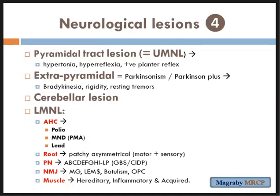The lower motor neuron lesion starts from the anterior horn cell down to the muscle. Any lesion from the anterior horn cell through the root, peripheral nerve, neuromuscular junction, or muscle is considered a lower motor neuron lesion. The most common anterior horn cell lesions include polio, motor neuron disease, and lead poisoning. For the root: any radiculopathy. For peripheral neuropathy, there are specific causes — a mnemonic ABCDEFGHI will be mentioned later. Most common are Guillain-Barré syndrome and chronic inflammatory demyelinating polyneuropathy (CIDP).